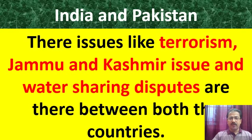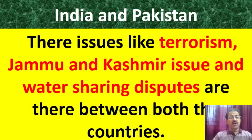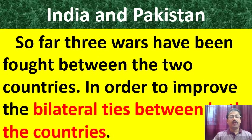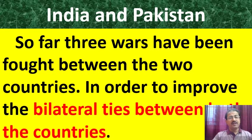Pakistan started attacking Indian borders and water borders, straining relations. Pakistan directly or indirectly sponsors terrorist activities, and India has evidence of this. India has raised this issue in international forums like the UN. Jammu Kashmir and water-sharing disputes are the burning problems between the two countries. India and Pakistan have fought more than three times — in 1947, 1965, 1971, and the Kargil war in 1999. In all these wars, India successfully defeated Pakistan.